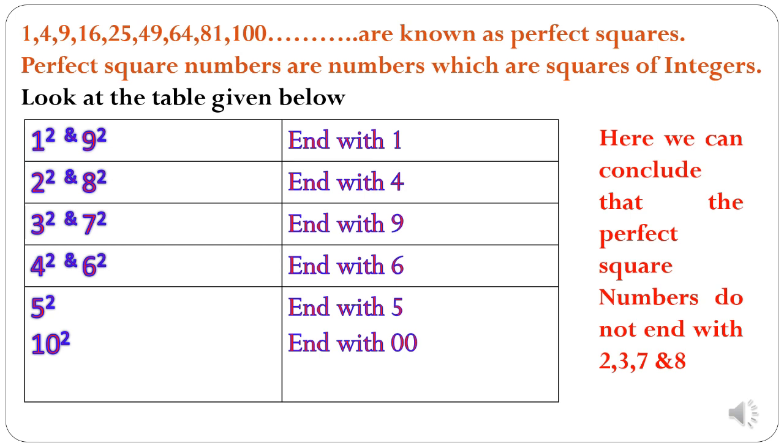So, we can conclude here that the perfect square numbers do not end with 2, 3, 7, and 8.